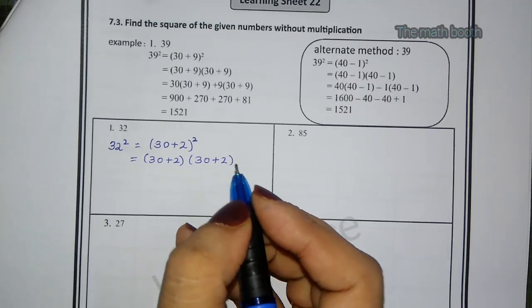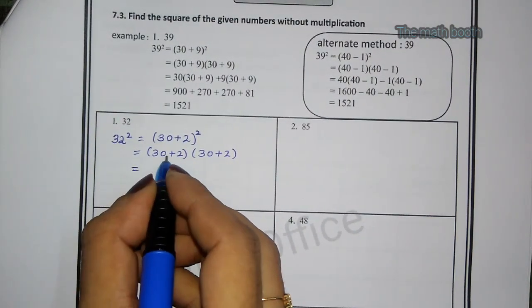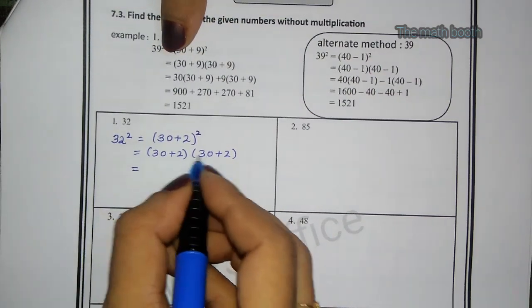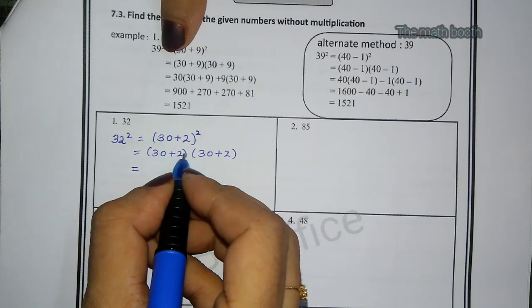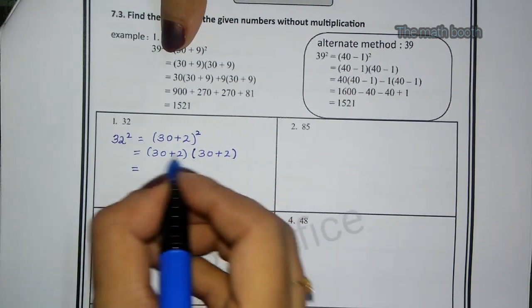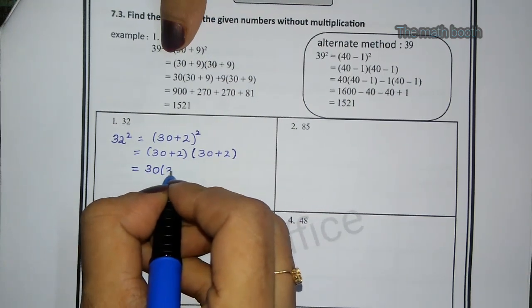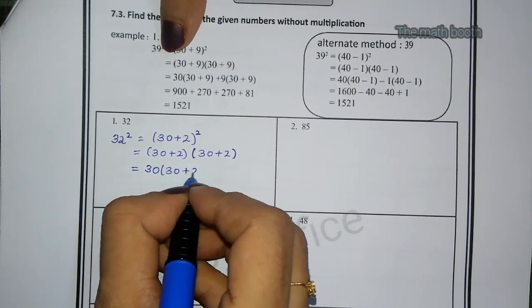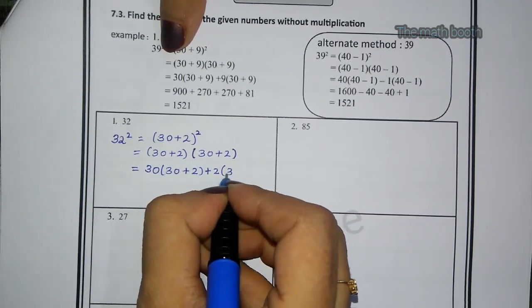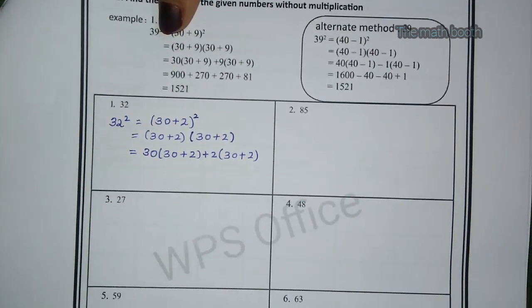Okay, we are not multiplying here, we are just solving. So now one bracket we will keep as it is, one bracket we will open. Here we can see two brackets, right? One bracket we will open and one bracket we will keep as it is. So this bracket I will keep as it is, this I will open. 30 into bracket. In this bracket what is left? Plus 2 into (30 + 2). So let us multiply now.